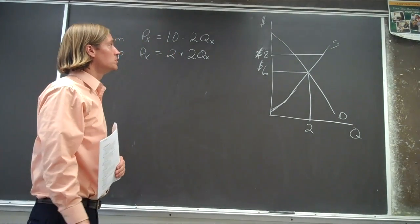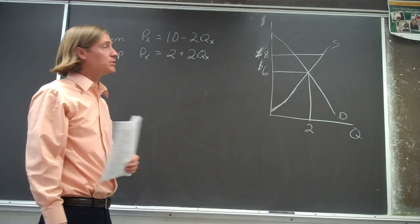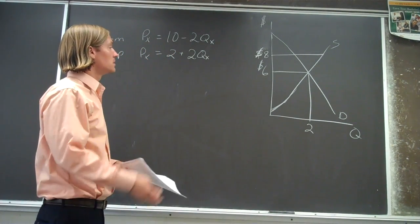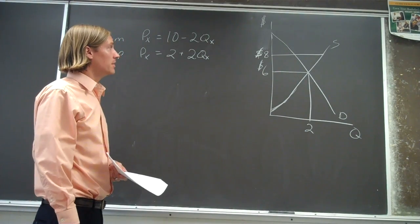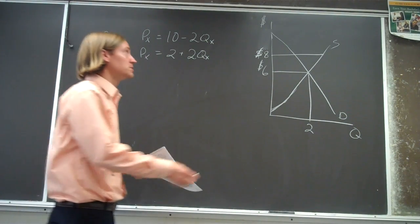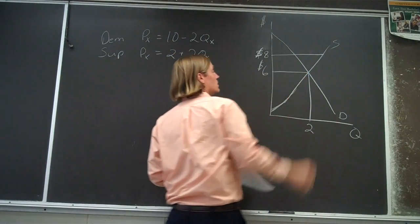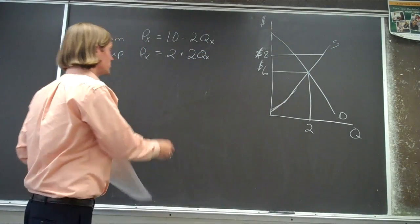So what happens to the consumer surplus? How much consumer surplus are the consumers receiving when there's a price floor of $8? Remember price floor says the price can't go below that $8. So where would it be?